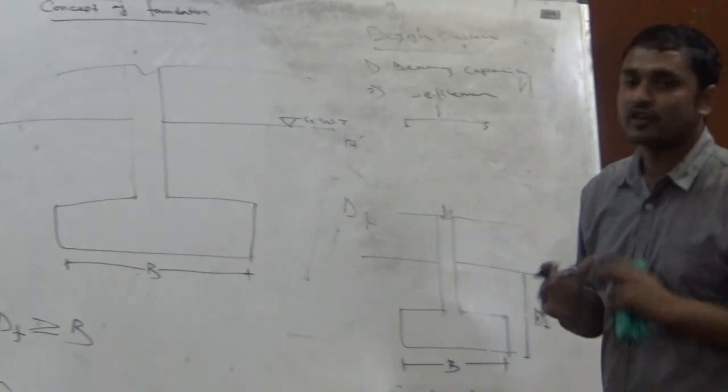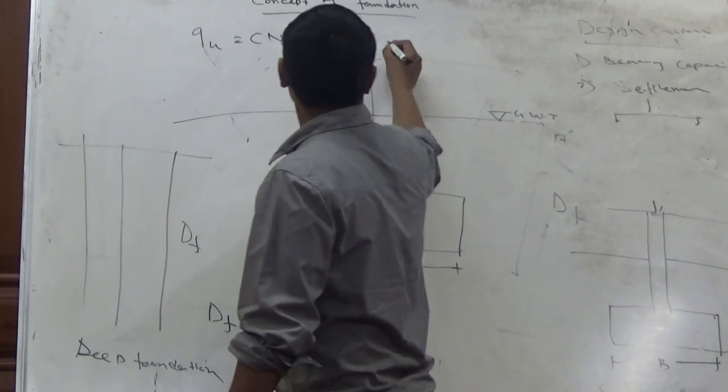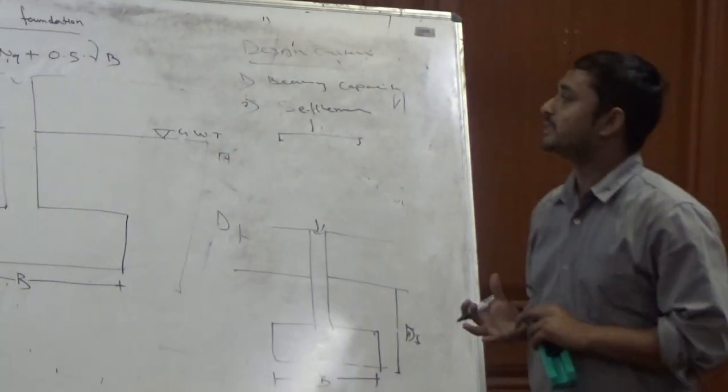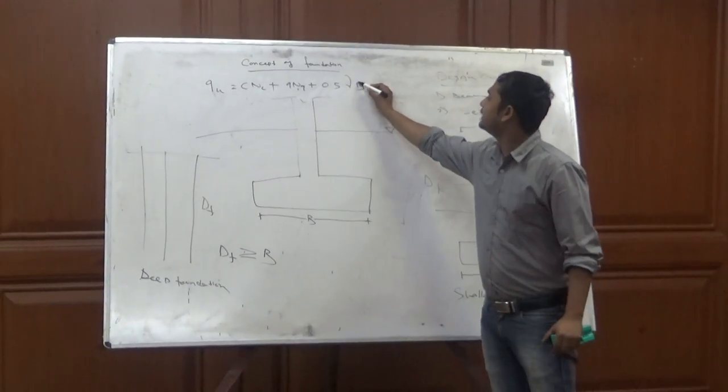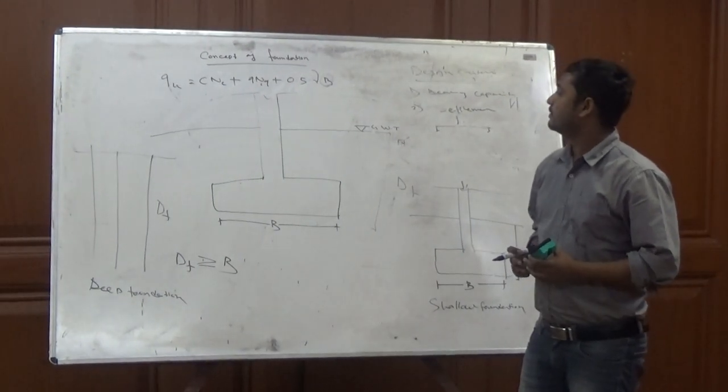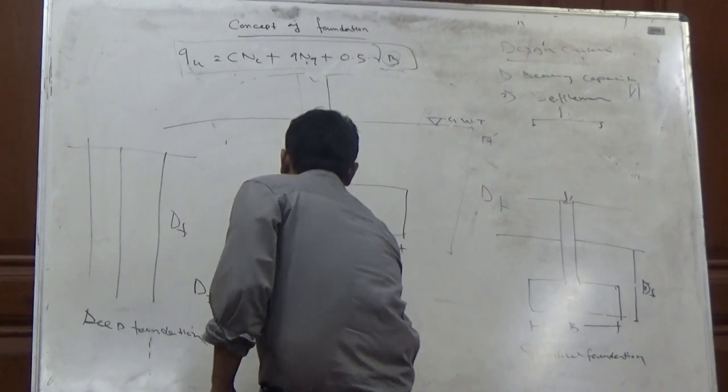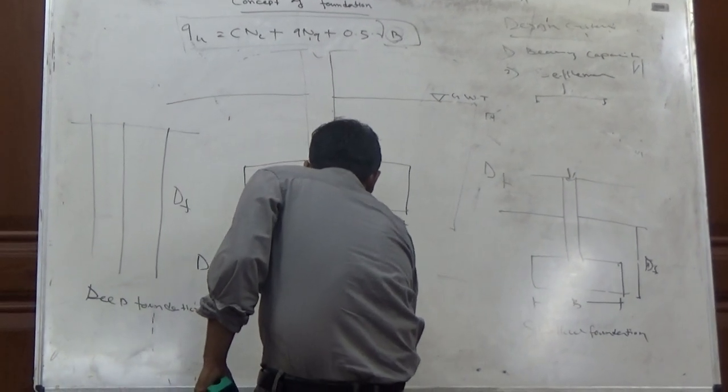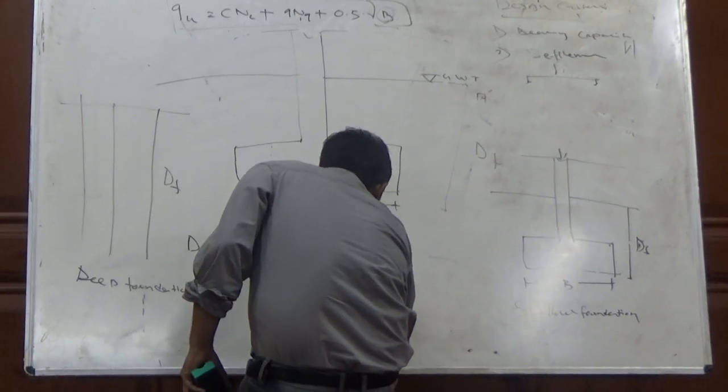So what is the main equation of foundation design? That is QU into C and Nc plus Q and Nq plus 0.5 gamma into B and Ng. Q is the ultimate bearing pressure. C is the cohesion for soil. Q is the surcharge. Gamma is the unit weight of soil. And here B is the width of the footing. And here Nc, Nq and Ng is bearing capacity factor.